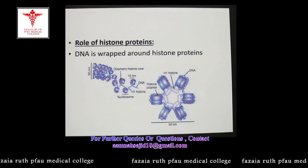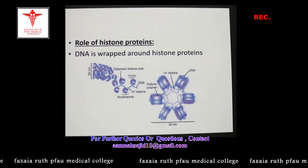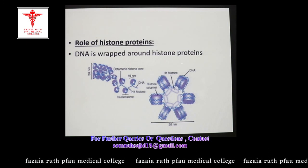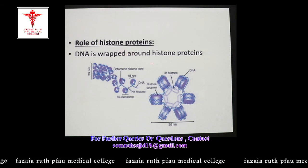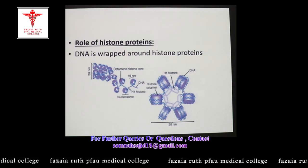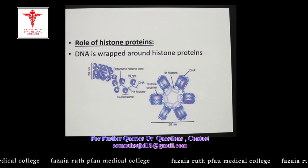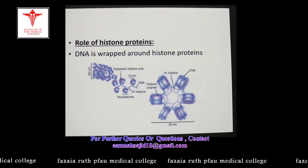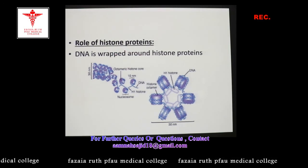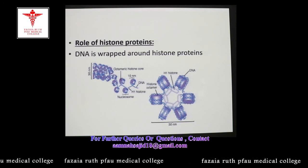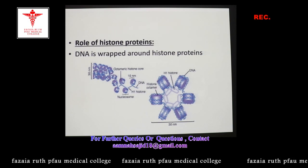Histone proteins are a group of basic proteins that carry a positive charge and can interact with the negatively charged DNA molecules. Histone proteins are involved in draping DNA around them, allowing long DNA molecules to be accommodated inside the small nucleus. The major role of histone proteins is the wrapping of DNA, due to which long DNA molecules can be packaged inside the nucleus.